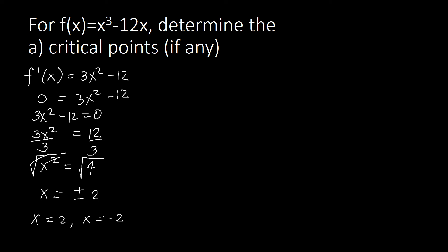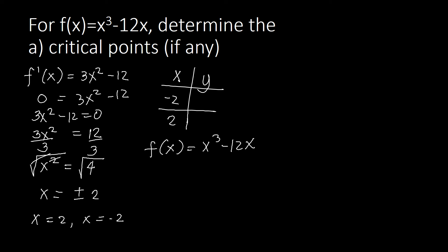Now that we have the critical numbers, we need to find the critical points by solving for the value of y. We substitute the critical numbers into the original function f(x) = x³ - 12x. Let's start with x = -2: f(-2) = (-2)³ - 12(-2).